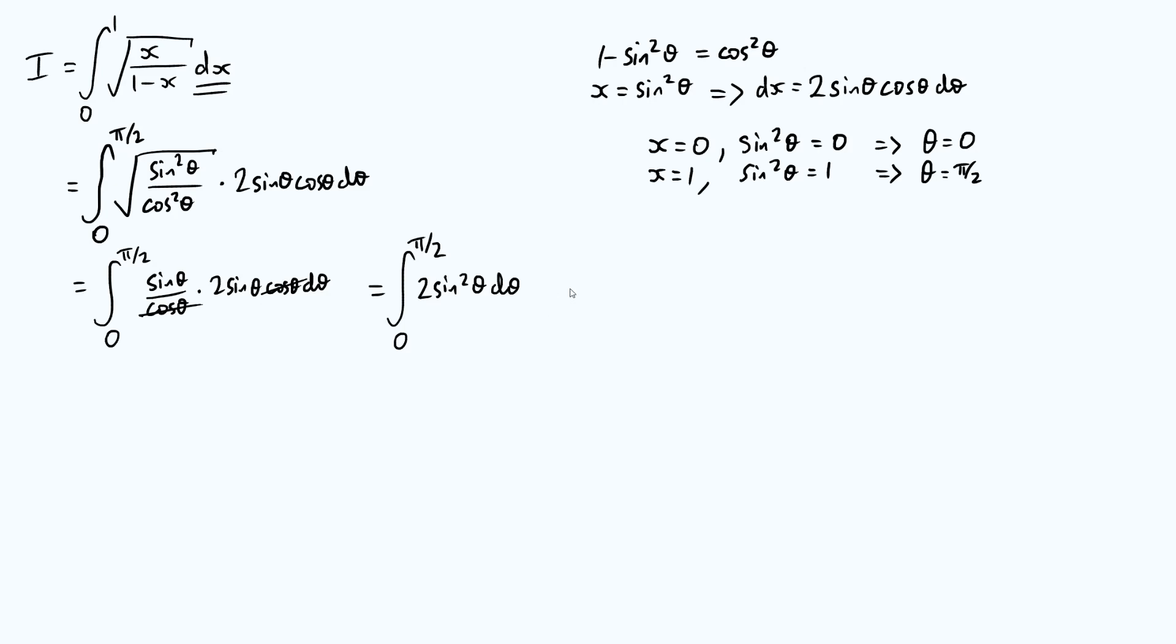So the usual way to integrate a squared trig function is to use a double angle identity. All right, so note that cos of 2 theta, this is one of our standard double angle identities. This is cos squared theta minus sine squared theta, but we can write cos squared theta as 1 minus sine squared theta, from this identity up at the top. And so this is actually the same as 1 minus 2 sine squared theta,